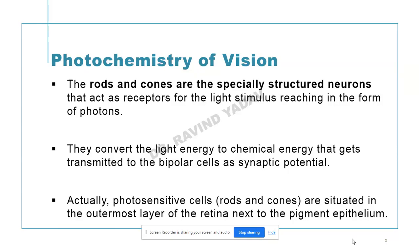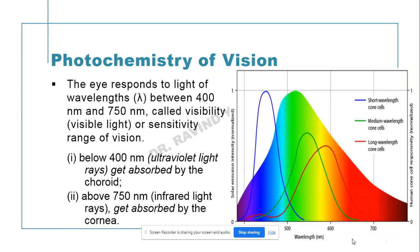These photosensitive cells — rods and cones — are situated in the outermost layer of the retina, which is next to the pigment epithelium layer. Our eye responds to light of a wavelength ranging from 380 to 750 nanometers, which we call the visible light range or the sensitivity range of vision.